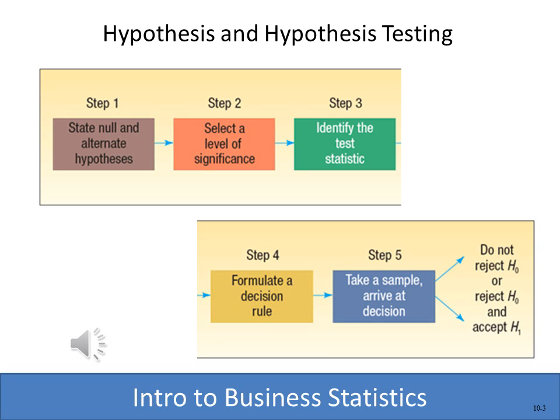The level of significance is related to the confidence interval — roughly, we want to be 90% or 95% confident. Then we're going to identify the test statistic, which might be the t, the z, or a couple of others. We'll formulate our decision rule, which is a critical z or t value looked up in the table. Then we compute a z, t, f, or chi-square and decide whether to reject the null hypothesis or not reject it and assume the status quo is still in place.